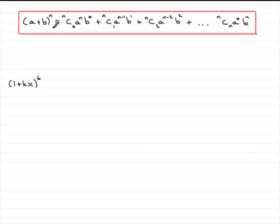You should know that if you've got a plus b to the power n, where n is a positive integer, and we have n is 6 here, then this is identical to nC0 times a to the power n, b to the 0, plus nC1 times a to the n minus 1, b to the 1, and so on. You'll find the nCr button on your calculator.